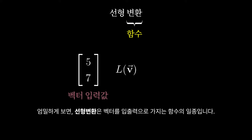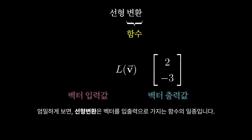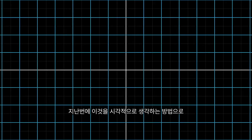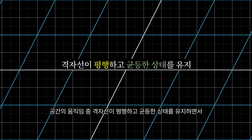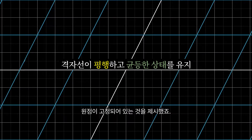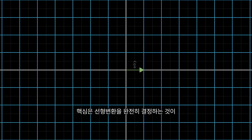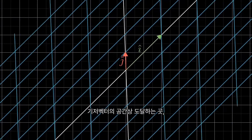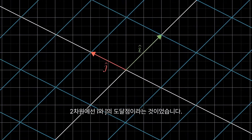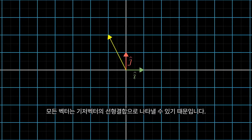Technically speaking, linear transformations are functions with vectors as inputs and vectors as outputs, but we can think about them visually as smooshing around space in such a way that grid lines stay parallel and evenly spaced, and so that the origin remains fixed. The key takeaway was that a linear transformation is completely determined by where it takes the basis vectors of the space — which for two dimensions means i-hat and j-hat — since any other vector can be described as a linear combination of those basis vectors.